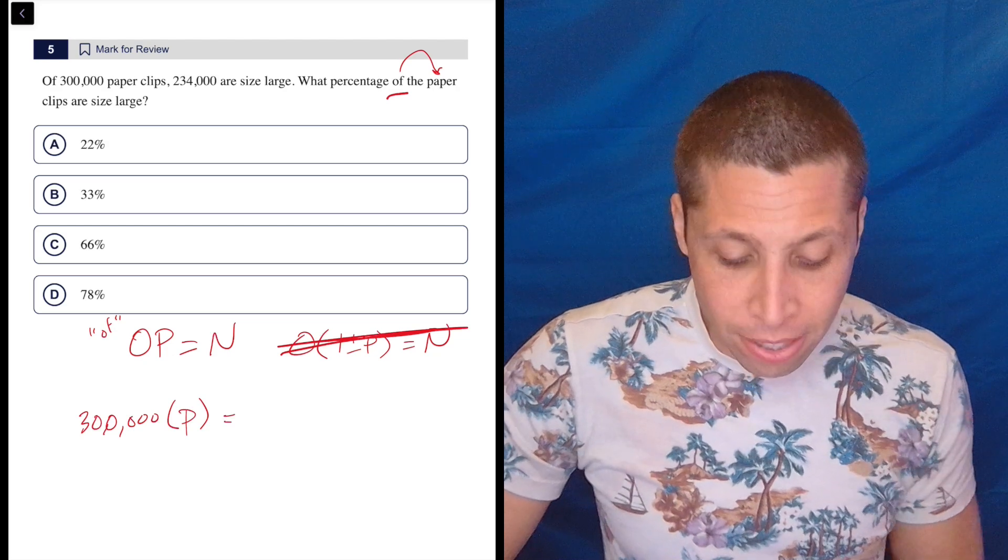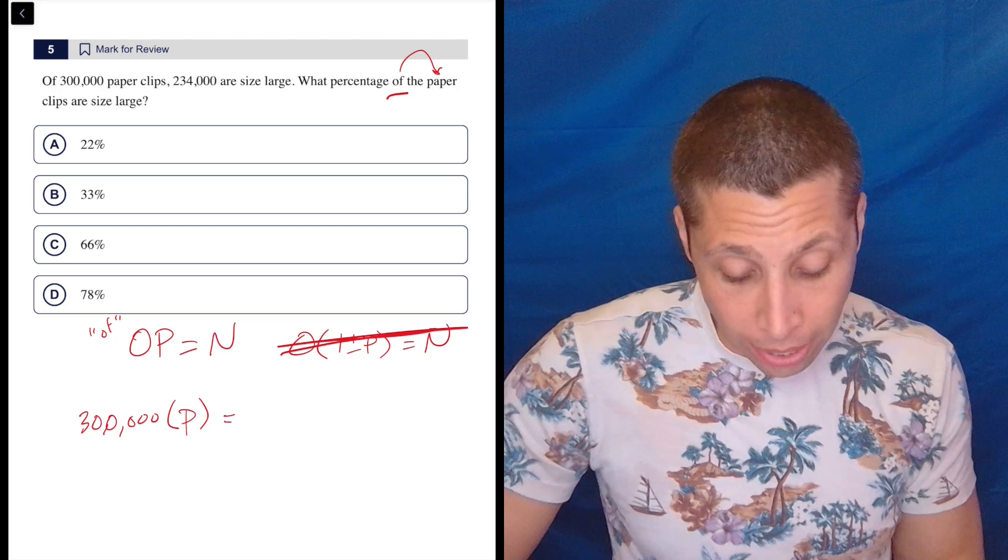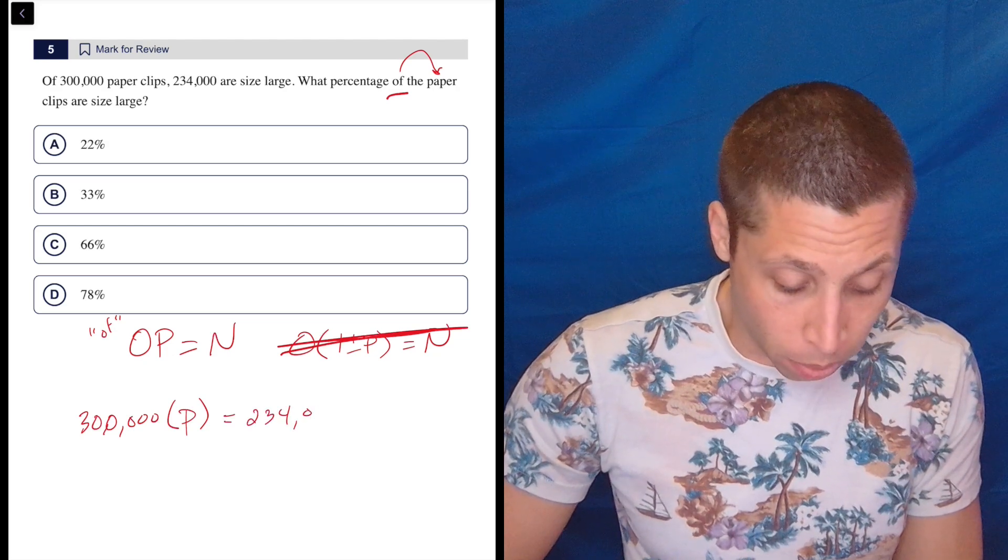And then the N is the new value, the result. So in that case, that's the 234,000.